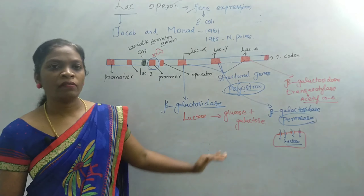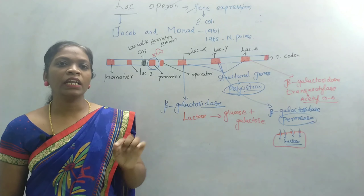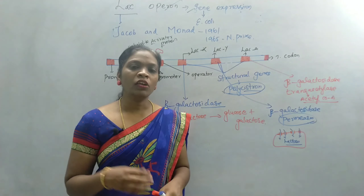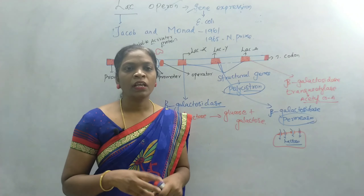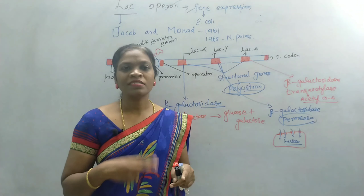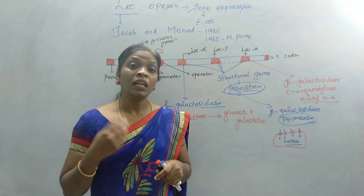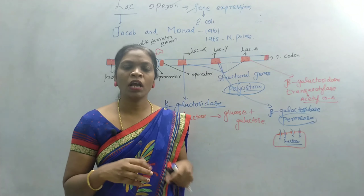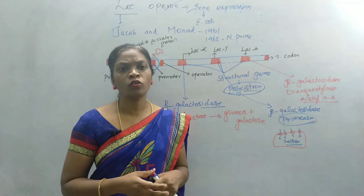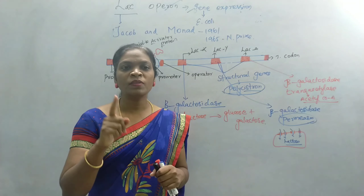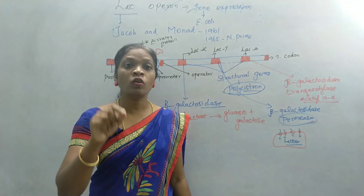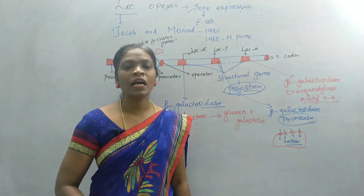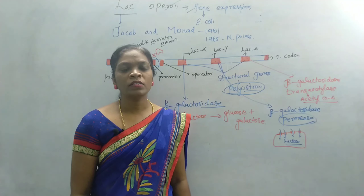To summarize the basics of lac operon: E. coli absorbs glucose from the human intestine as a carbon source. When there is no glucose, the organism has to go for lactose metabolism. If both glucose and lactose are present in the environment, E. coli will prefer only glucose because lactose metabolism requires much more energy and is time-consuming. If there is no glucose, they go with lactose. When lactose metabolism is needed, the lac operon will be switched on; when there is no need, it will be switched off. By the next video, we will learn about the lac operon concept in detail. Thank you.